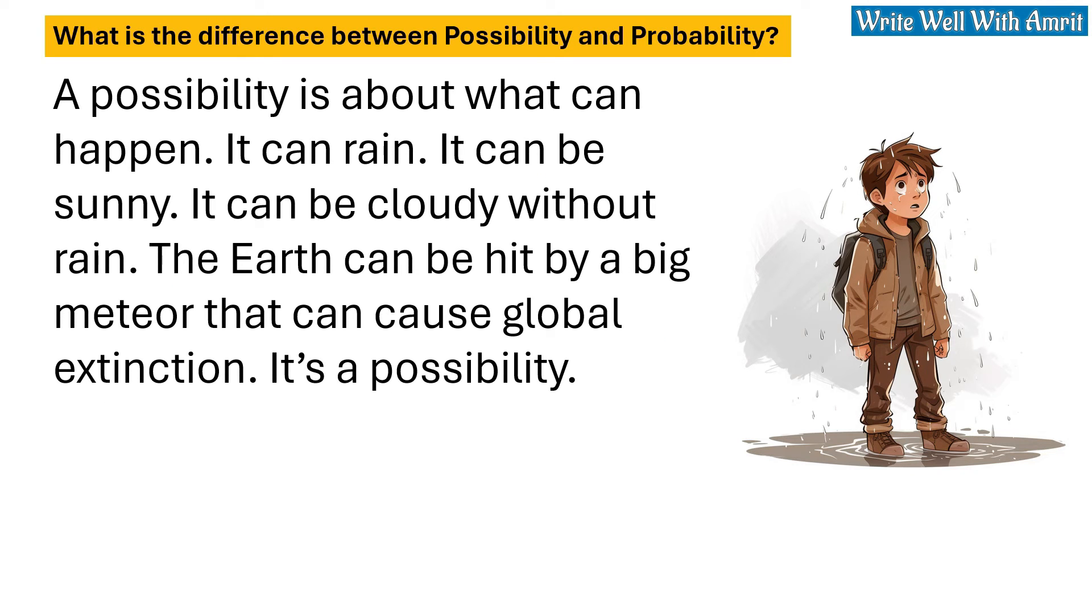A possibility is about what can happen. It can rain, it can be sunny, it can be cloudy without rain. The earth can be hit by a big meteor that can cause global extinction. It's a possibility.